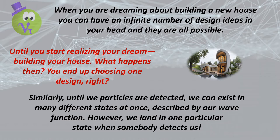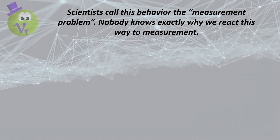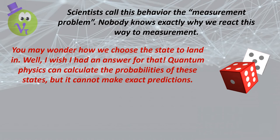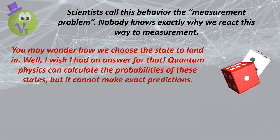Scientists call this behavior the measurement problem. Nobody knows exactly why we react this way to measurement. You may wonder how we choose the state to land in — I wish I had an answer for that. Quantum physics can calculate the probabilities of these states, but it cannot make exact predictions.